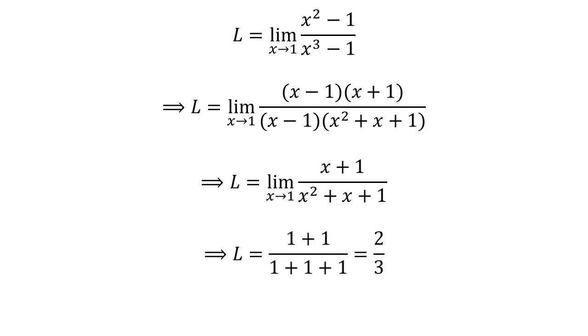As x plus 1 upon x squared plus x plus 1 is a continuous function at point 1, we can plug in 1 for x. This leads us to L equals 2 upon 3.